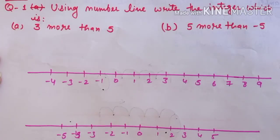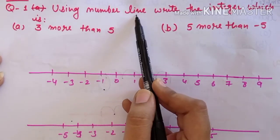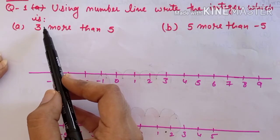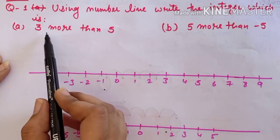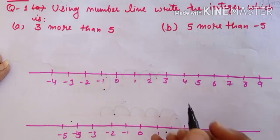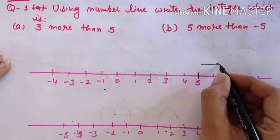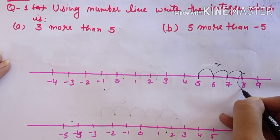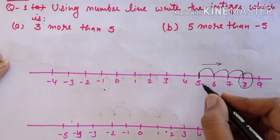Now we start exercise 6.2, question 1: write the integer which is 3 more than 5. We mark 5 on the number line. '3 more than' means add, so we move right side 3 steps: 1, 2, 3. Our answer is 8.